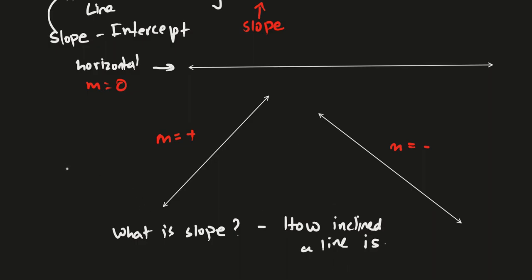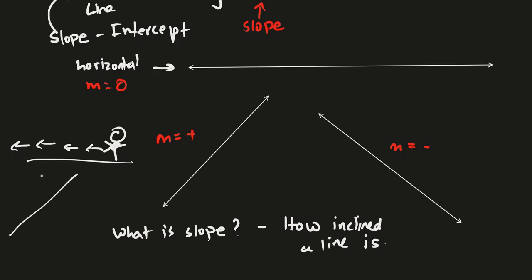Slope is essentially how inclined a line is. For example, think of a slide. If the slide were horizontal, it wouldn't be a slide — you wouldn't go down it because it's horizontal. You could just walk down it because it's not sloped; gravity wouldn't act in the direction of motion. But if you had a slope like this — a positive slope — and you were sitting on it, you would go down because of gravity.